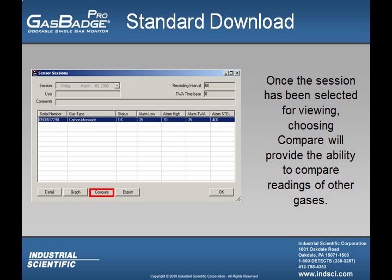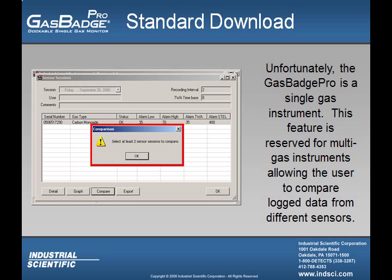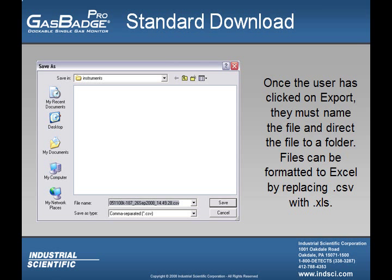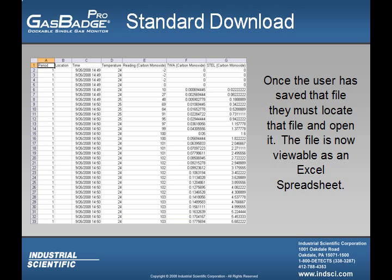If the user wanted to compare two or more sensors, they can click on that tab. However, it's important to know that the Gas Badge Pro is a single gas instrument — this feature is reserved for multi-gas instruments, which allow the user to compare logged data from different sensors. Finally, if the user wants to save the session's data into a different file format, they can click on Export, name the file, and direct it to a folder. Data logging sessions can be formatted for Excel by replacing the .csv extension with .xls. Once saved, the user can locate the file, open it, and view that session as an Excel spreadsheet.